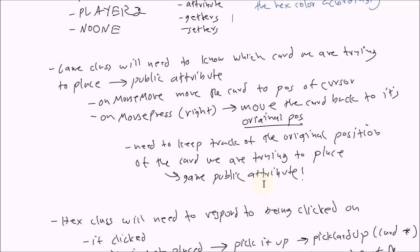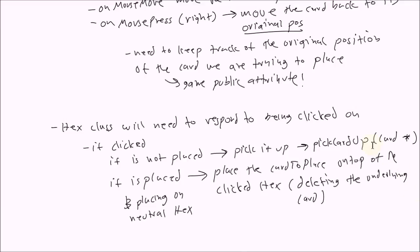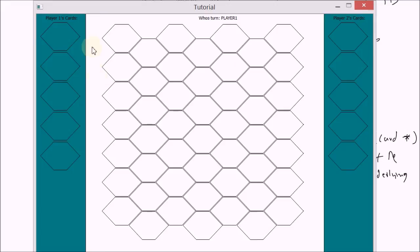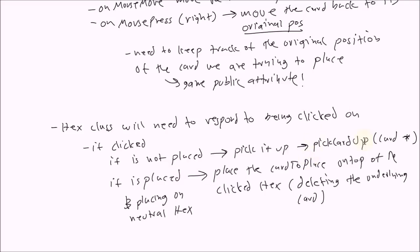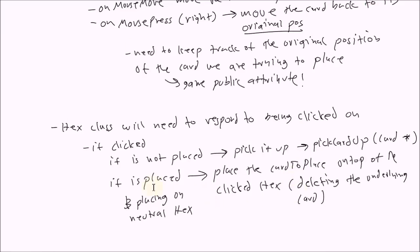We'll make a game public attribute called the original position, which keeps track of the original position of the current card you're trying to place. The hex class will also need to respond to being clicked on. We need two member functions: pick card up, which takes a pointer to a card and picks that card up, and place card, a member function that will replace the card. So that's the planning — now let's start implementing from the very beginning.